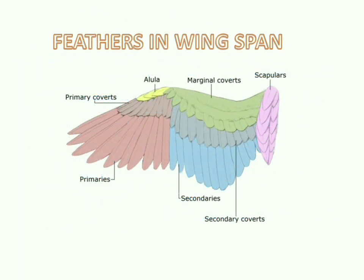The wing is a special feature of all birds. Flying birds mostly have well-developed wings which show a variety of feathers named as primaries, primary coverts, alula, secondaries, secondary coverts, marginal coverts, and scapulars. Based on the location of the feather on the wing, they are named with different names.